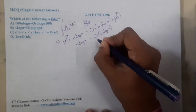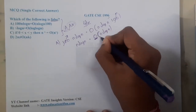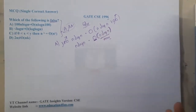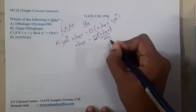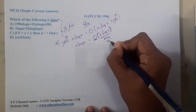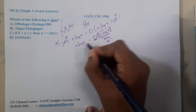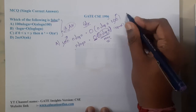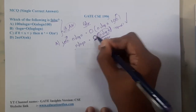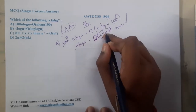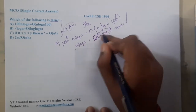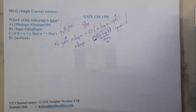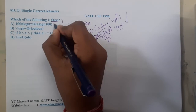Recall the property of Big-O: the right-hand side is the maximum, meaning worst case. Big-O means g(n) should be greater than or equal to f(n). Here both sides are equal, so the equal case is satisfied. Hence option A is absolutely true.